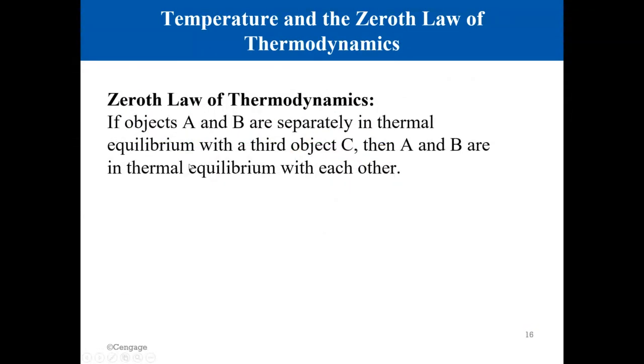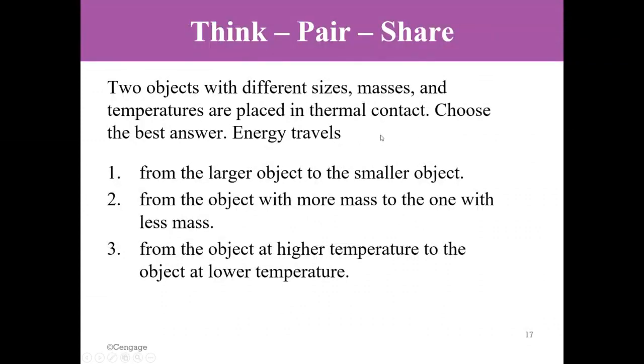This is the formal statement for this law. If objects A and B are separately in thermal equilibrium with the third object C, which is the thermometer in this case, then A and B are in thermal equilibrium with each other. The meaning of thermal equilibrium is that heat will not flow from one side to another side. There is no need for heat to flow. In order for heat to flow from one side to another side, there should be a temperature difference between them.